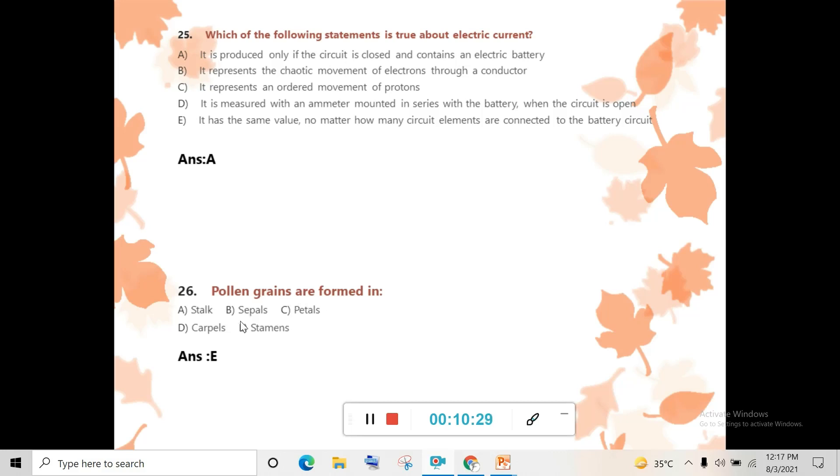Question 26: Pollen grains are found in - we have discussed the flower diagram. Flowers have four structures: sepal, petal, stamen, and carpel. Sepals are green and protect the flower. Petals are colorful and attract pollinators. Stamen has two structures: filament and anther. Carpel has style, stigma, and ovary containing ovules. Pollen grains are formed in stamen, in the anther. E is correct.